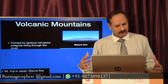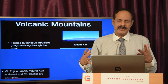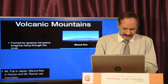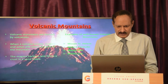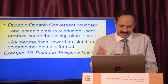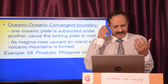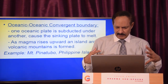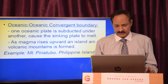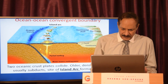Volcanic mountains are formed by igneous intrusions — magma rising through the crust. When two oceanic plates collide with each other at convergent boundaries, you have examples like Mount Fuji in Japan, Mount Mauna Kea in Hawaii, and Mount Rainier. At an ocean-ocean convergent boundary, one oceanic plate is subducted under the other, causing the sinking plate to melt, so as magma rises upward an island arc of volcanic mountains forms — like Mount Pinatubo and the Philippine Islands.